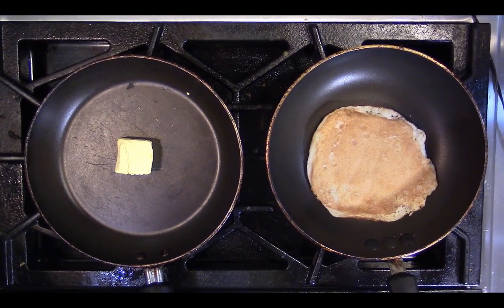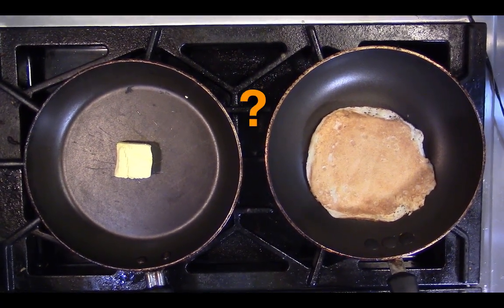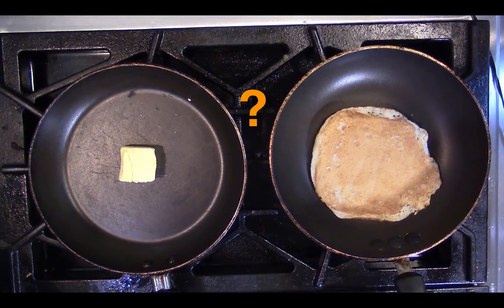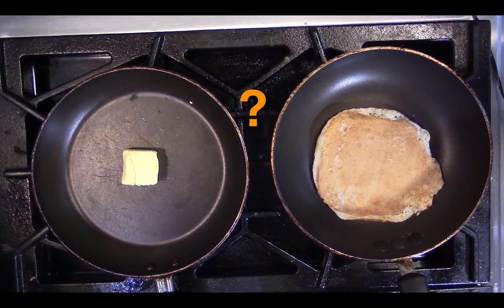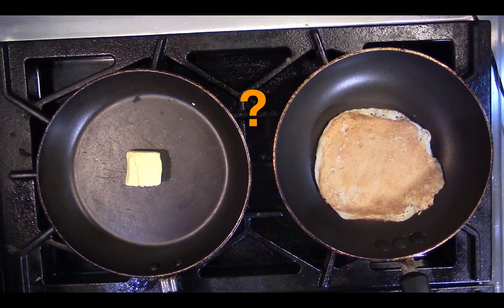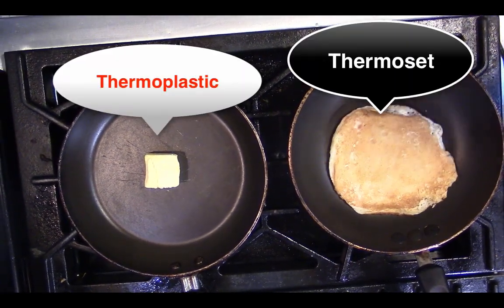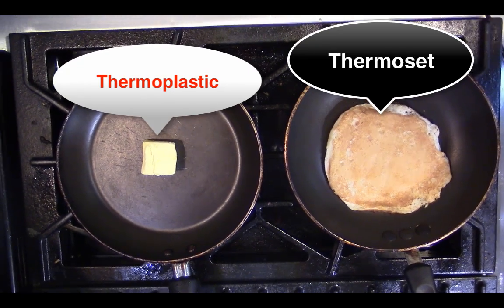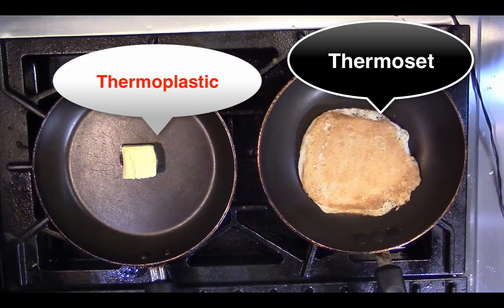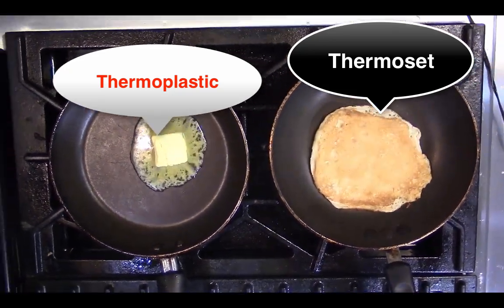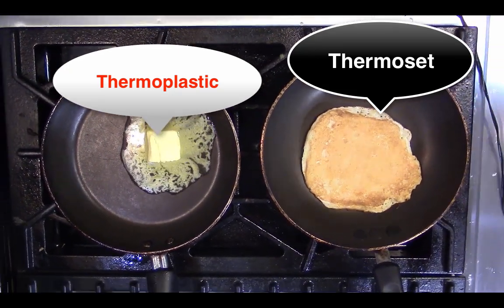Here, we have a stick of butter and a pancake. Which one of these two foods behaves more like a thermoset, and which one behaves more like a thermoplastic? If you answered that butter acts like a thermoplastic, and the pancake acts like a thermoset, you're right! As you can see, the butter melts when heated, but the pancake burns.